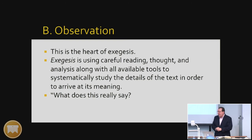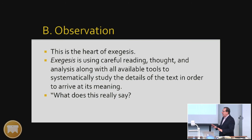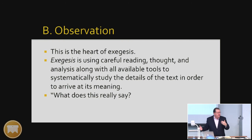At this point, your primary goal isn't how does this apply, and it isn't even yet that you've made a final interpretive decision — we'll do that in interpretation. This is: I need to understand what this text, what this passage actually says. You have to go there before you can go to what it means. You have to look at the constituent parts that are there to discern what it's really saying.